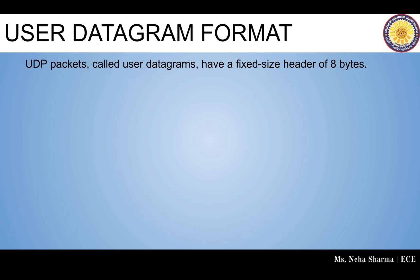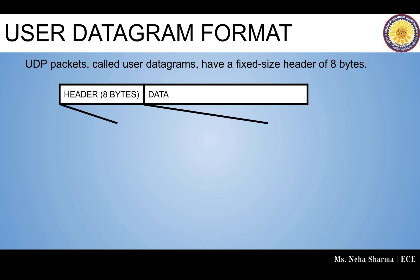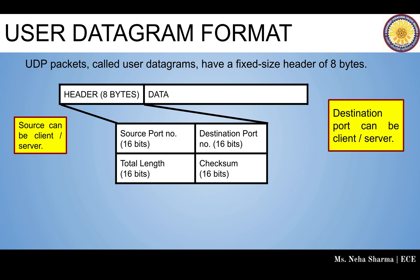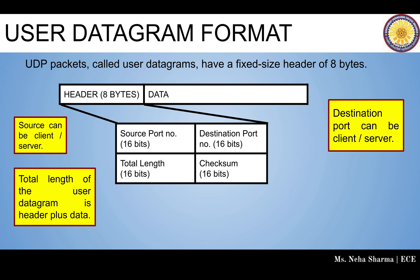Now we'll talk about the UDP header. UDP packets, also known as datagrams, have a fixed-size header of 8 bytes. These 8 bytes are divided into four parts: source port number (16 bits), destination port number (16 bits), total length (16 bits), and checksum (16 bits) — all of 16 bits. Since one byte has 8 bits, that calculates to 8 bytes total. The total length of the user datagram is header plus data.